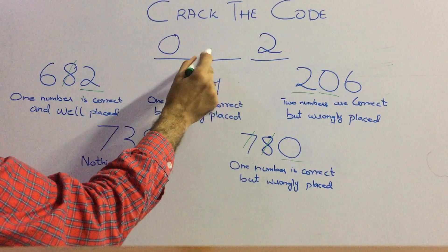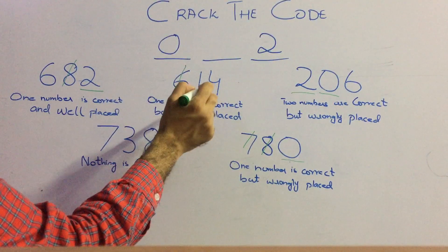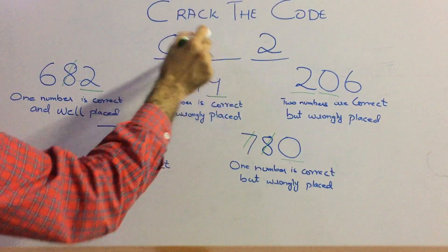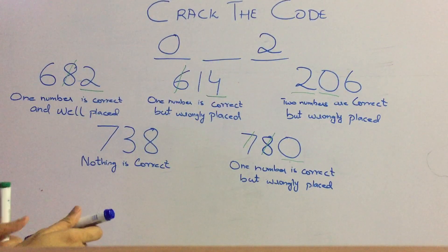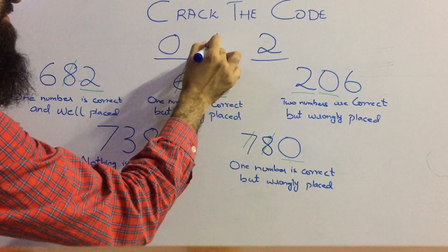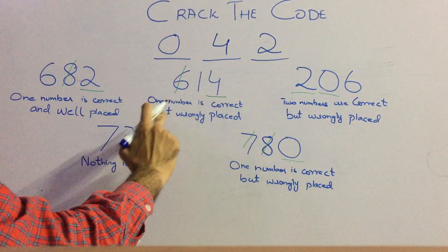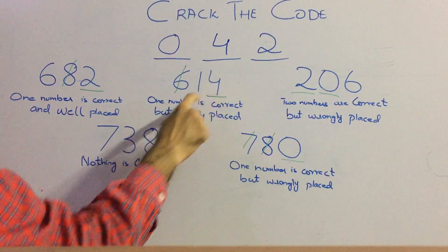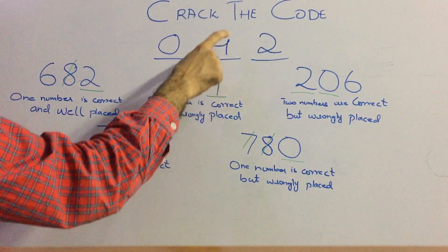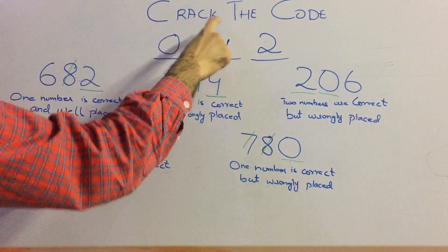Because we have to write it in the second place, and the 4 is already at the third place, so we will write over there. We have got 4 over there, so we have satisfied this hint as well - that 1 number is correct, the number 4 is correct but wrongly placed. Means its correct position is at the second position. So we have done with this question.